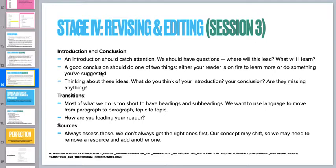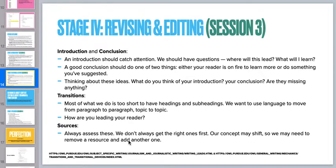Some tips for working with this: watch for transitions — are they working, are we still moving efficiently from spot to spot, are we leading our reader? What about our introduction and conclusion — does it catch attention, does it encourage our reader to act? Acting can even be just thinking about something. We want a clear purpose for why we have explored a particular topic. Our revising and editing may focus on specific areas — maybe the middle of the paper is great and we just need to work on a support paragraph and a conclusion. And of course, we're always assessing sources: did we get the right ones, did our concept shift, do we need to add a source and remove another?